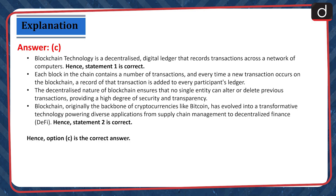The correct answer is Option C. Blockchain technology is a decentralized digital ledger that records transactions across a network of computers — hence Statement 1 is correct. Each block in the chain contains a number of transactions, and every time a new transaction occurs, a record is added to every participant's ledger. The decentralized nature ensures no single entity can alter or delete previous transactions, providing high security and transparency. Blockchain, originally the backbone of cryptocurrencies like Bitcoin, has evolved into a transformative technology powering applications from supply chain management to decentralized finance — hence Statement 2 is correct. Option C is the correct answer.